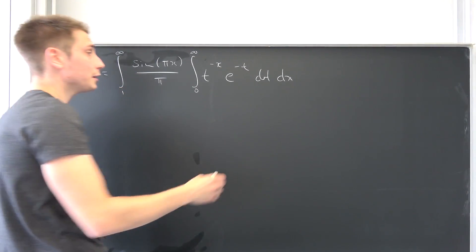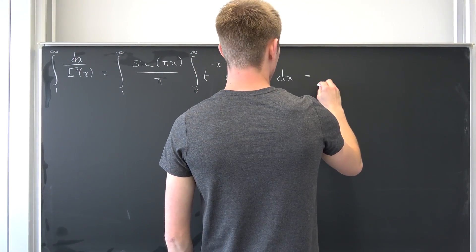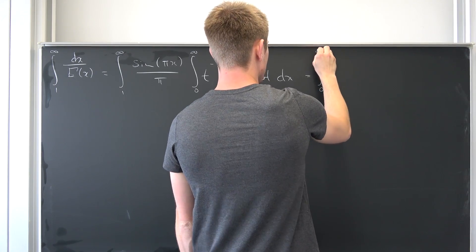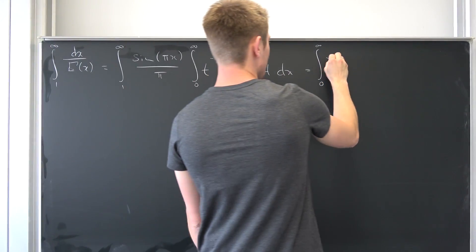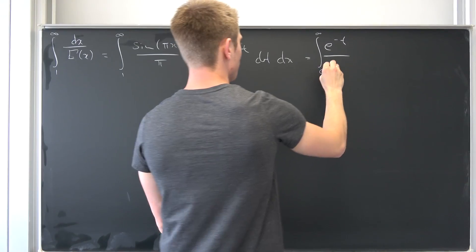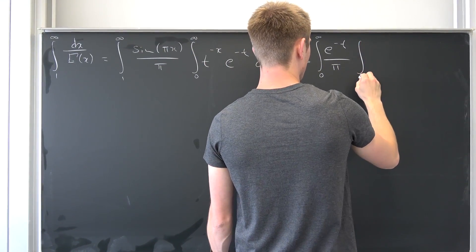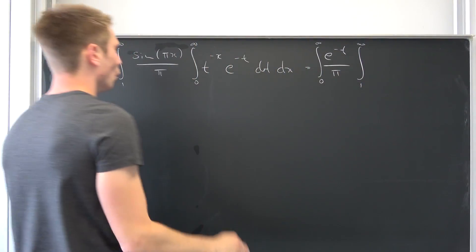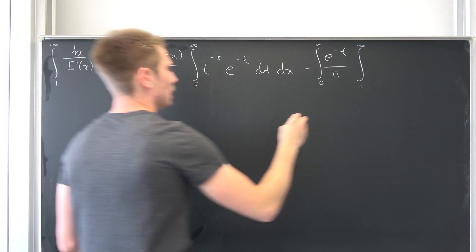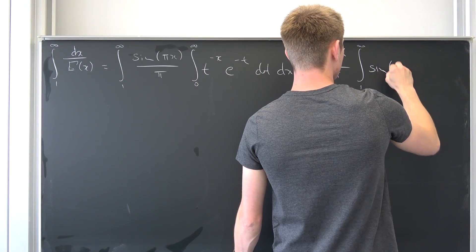And just the same process once again interchanging integrals because we can use Fubini. It does convert to finite value of some sort. So integral from 0 to infinity this time and then we're going to have e to the negative T over pi, integral from 1 to infinity of the sine of...